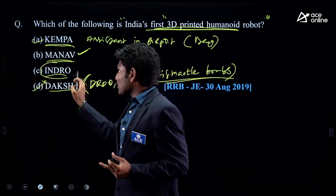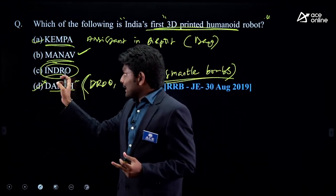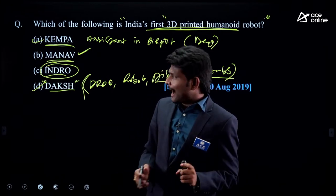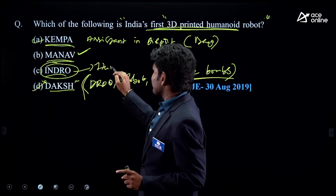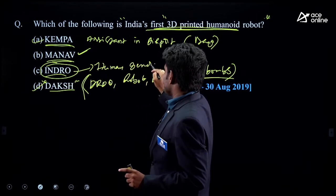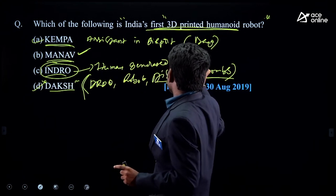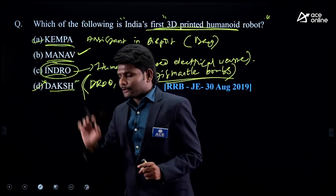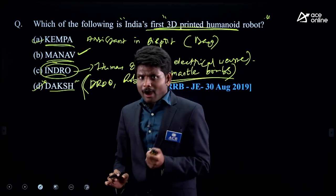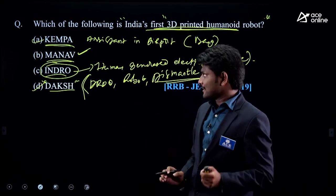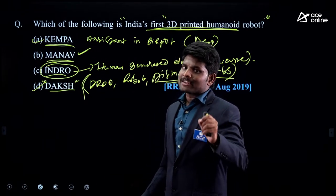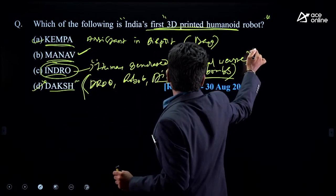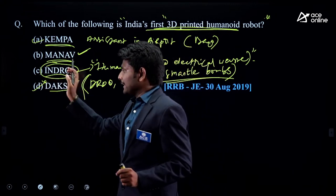Indra is a robot with an interesting story — the person who made it was inspired by the Rajinikanth movie 'Robot.' He used human-generated electrical waste to create this gadget. Indra is being developed by an Indian inventor using electronic components from electrical waste. He thought out of the box — no costly materials, just recycled electronic waste.